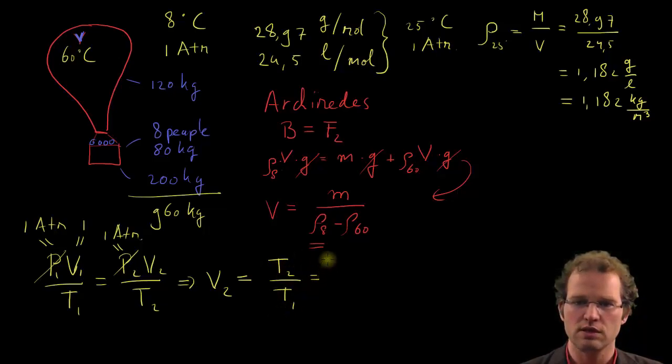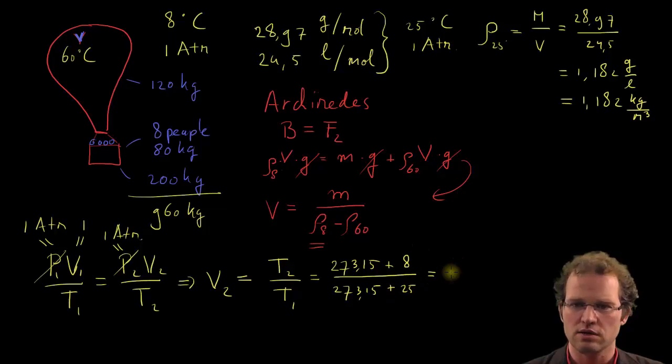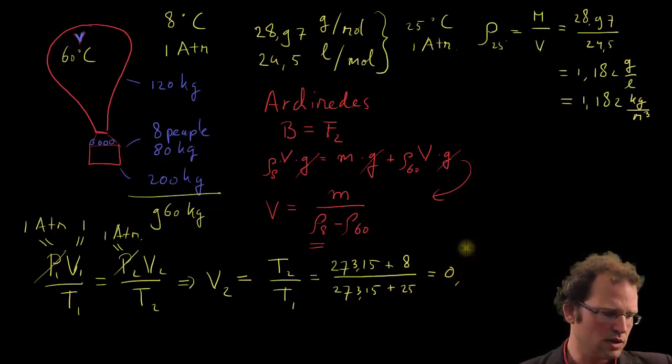And we have to do it in degrees Kelvin, otherwise this ideal gas law doesn't work. So we get here the following. This is for calculating Celsius into degrees Kelvin. And T₂ was 8, and T₁ we started with 25, so this one will be less than 1.